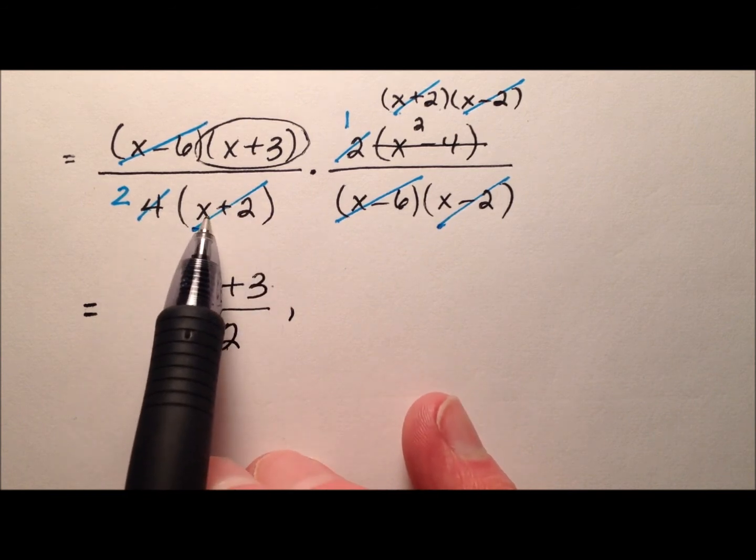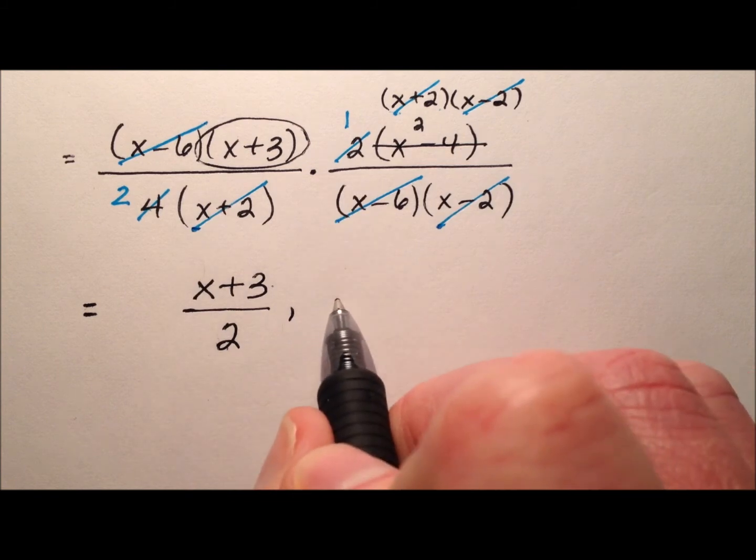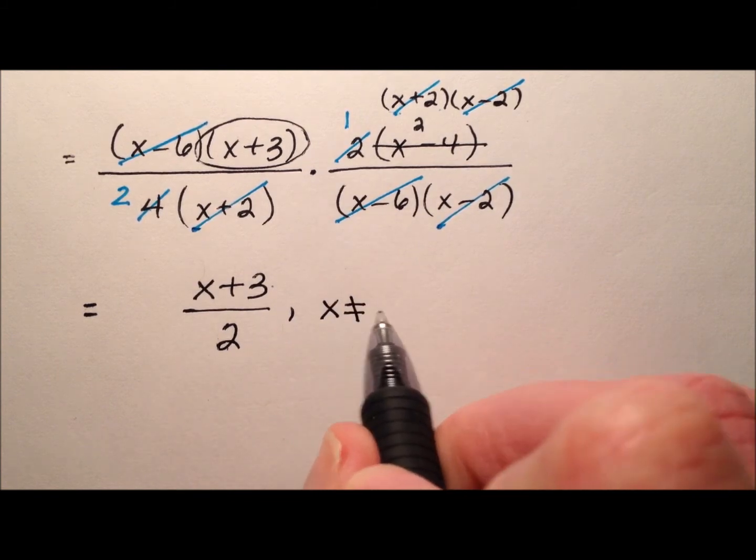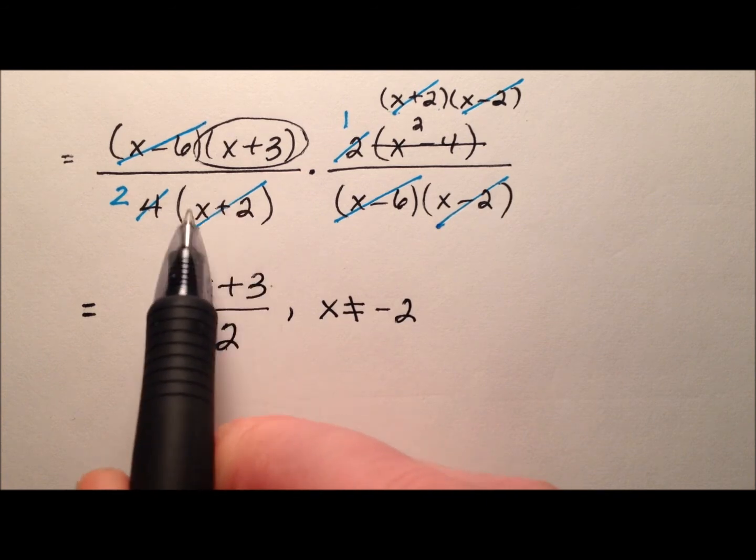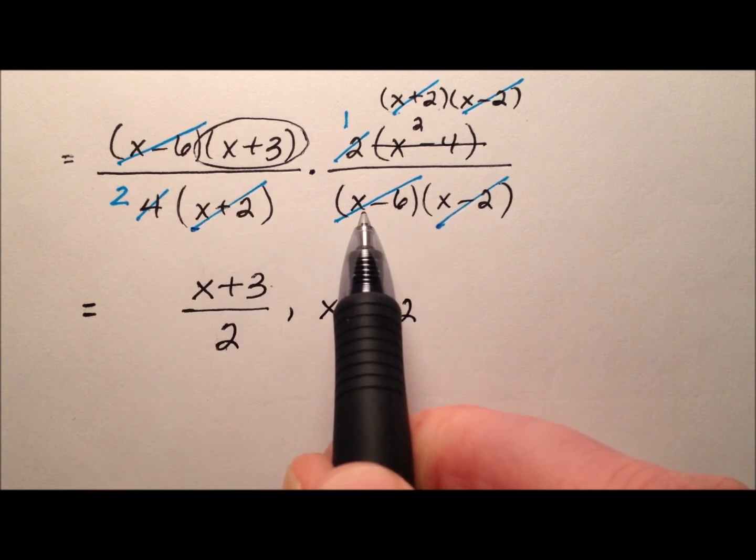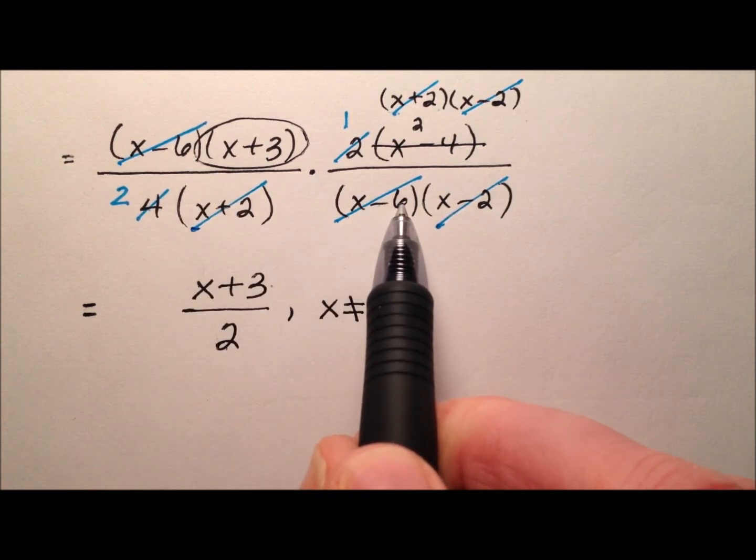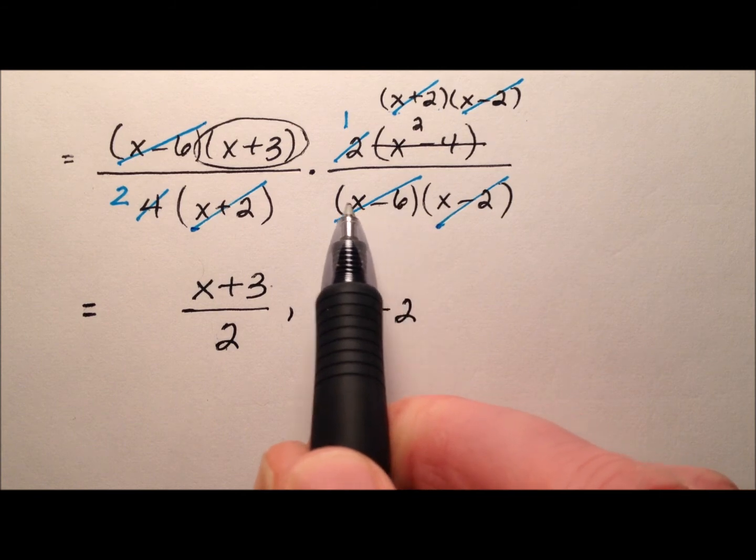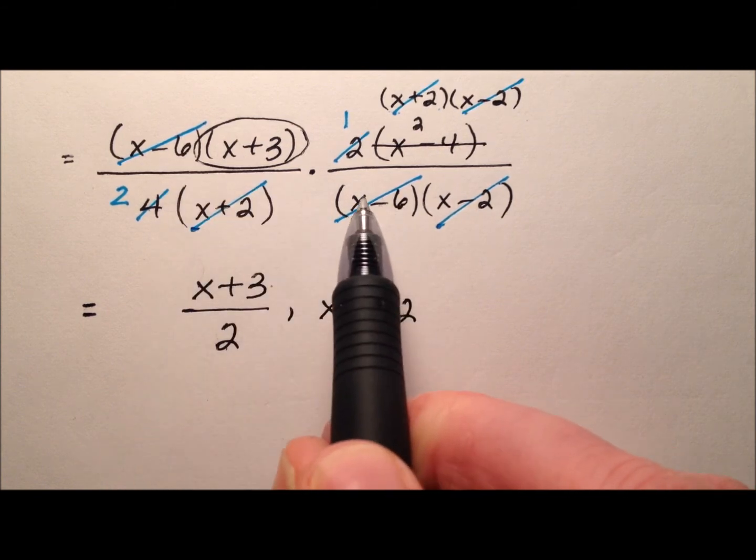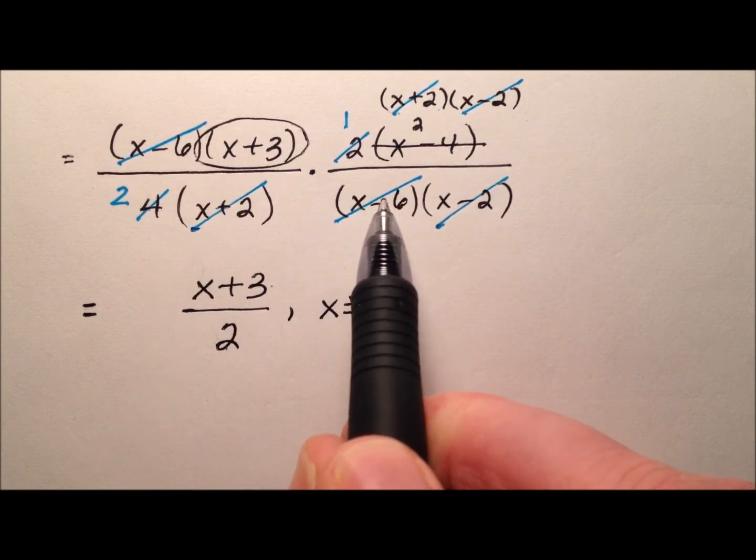So if I were to plug a negative 2 in there, that would give me a 0. So I know x cannot be negative 2 because I can't divide by 0. Similarly, x - 6 was factored out and then canceled from top to bottom. So I can't have a 6 because 6 - 6 is 0.